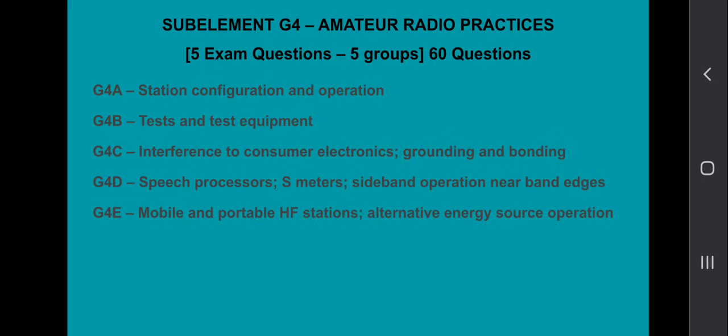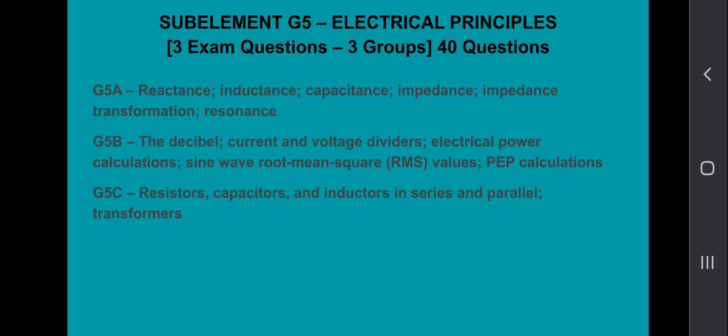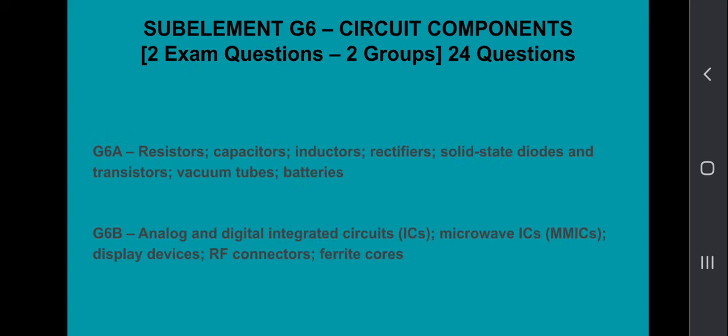Sub-element G4, amateur radio practices. Five exam questions come from the five groups, 60 questions total. Sub-element G5, electrical principles. Three exam questions come from the three groups, 40 questions.